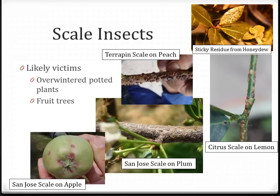Terrapin scale are not as common on fruit trees as San Jose scale. San Jose scale are also a pest on both stone fruit and pome fruit. They are easily detected against the unripe or yellow skin of an apple but more difficult to detect against the red skin. San Jose scale on the wood in large enough numbers will give the tree a whitish to ghostly appearance. A sticky residue is evidence of a sap-feeding insect.